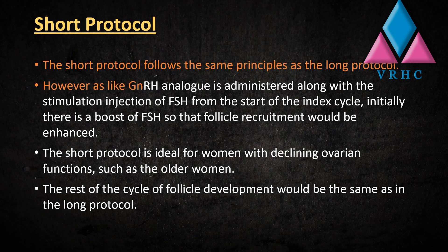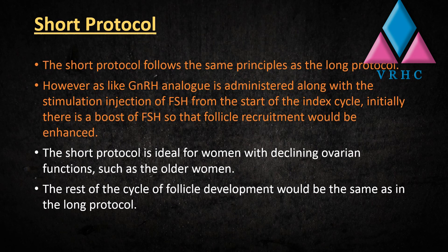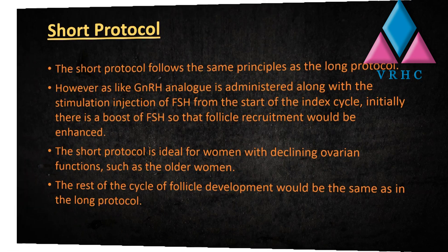In the short protocol, a GnRH analog is administered along with the stimulation injection of FSH from the start of the index cycle. Initially there is a boost of FSH so that follicle recruitment is enhanced. The short protocol is ideal for women with declining ovarian function, such as older women. The rest of the follicle development cycle is the same as in the long protocol.